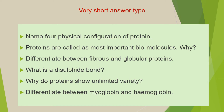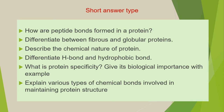Next question is: differentiate between myoglobin and hemoglobin. Now, the second category of questions are short answer questions and you have to answer these questions in a single paragraph. The first question is: how are peptide bonds formed in a protein? Next question is: differentiate between fibrous and globular proteins.